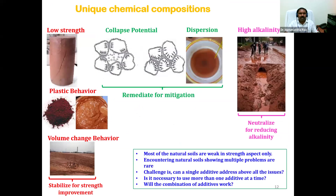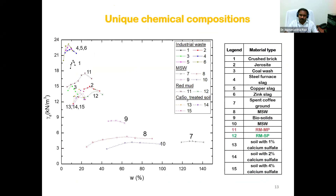With conventional soils we focus only on strength improvement, but unlike our expectations, some tailings can also exhibit plastic or volume change behavior unpredictably. Because of their unique chemical compositions, tailings can simultaneously exhibit low strength, collapse potential, dispersion, or depending on the waste type, high alkalinity. The challenge lies in addressing multiple characteristics together.